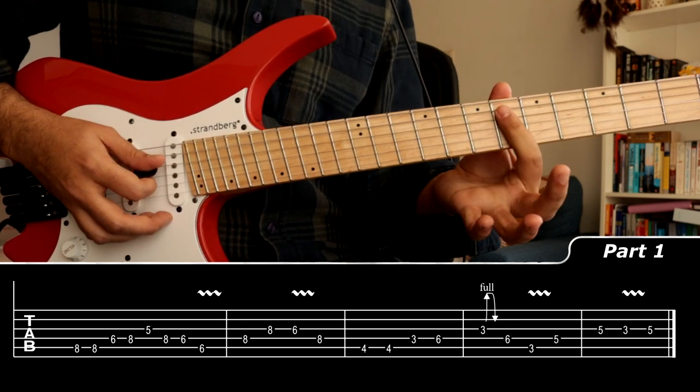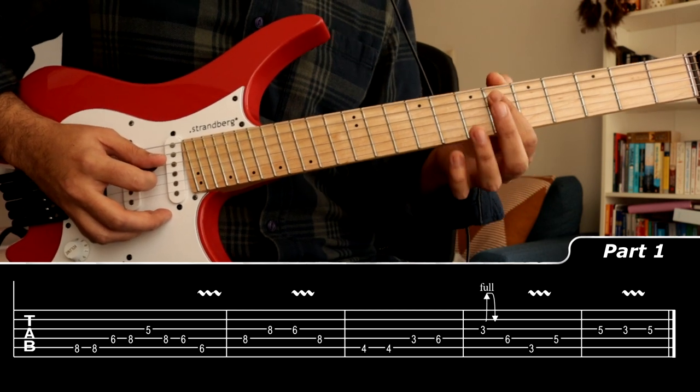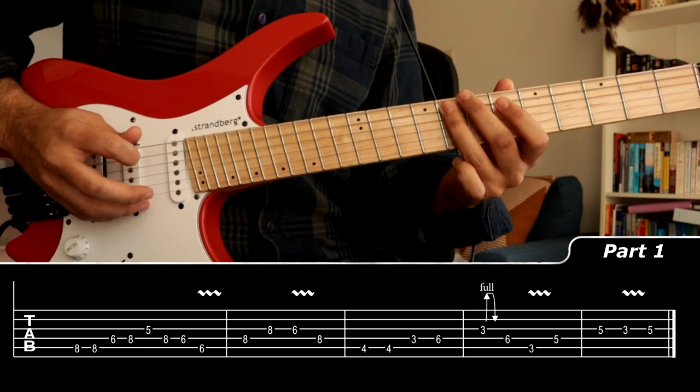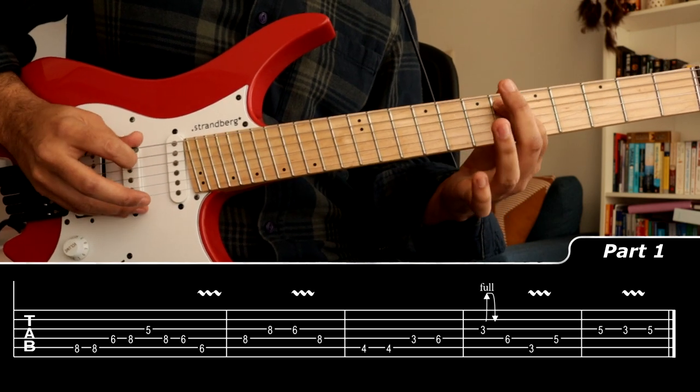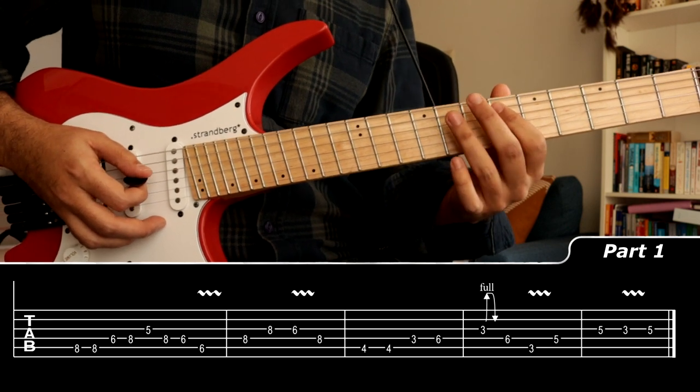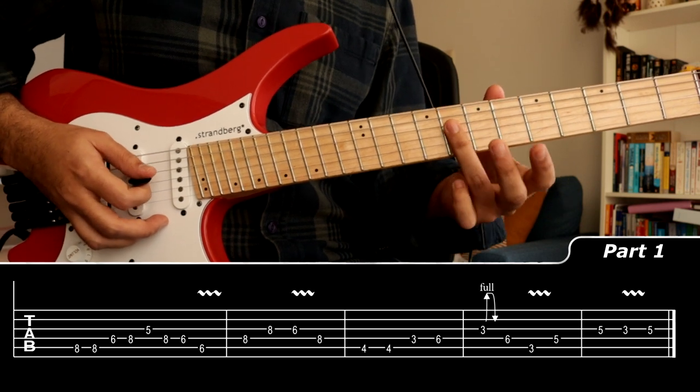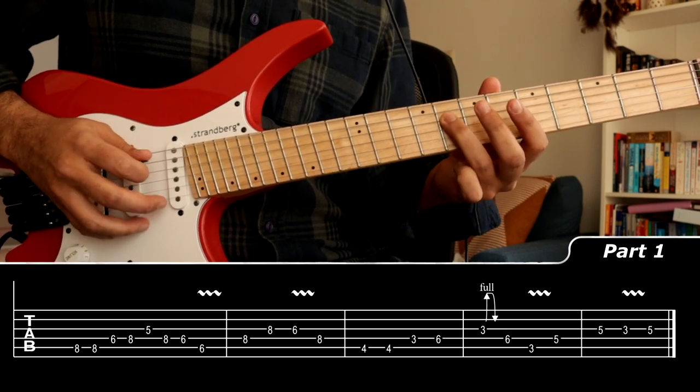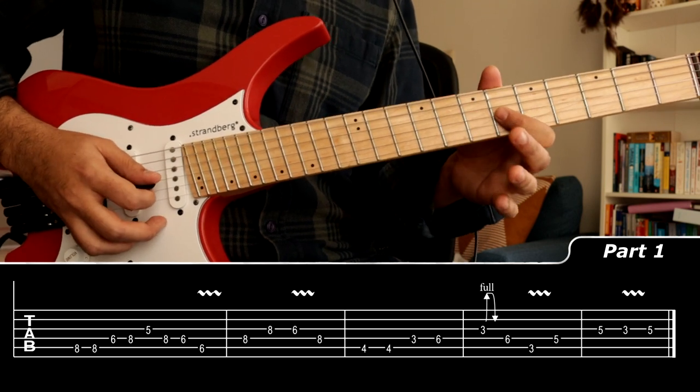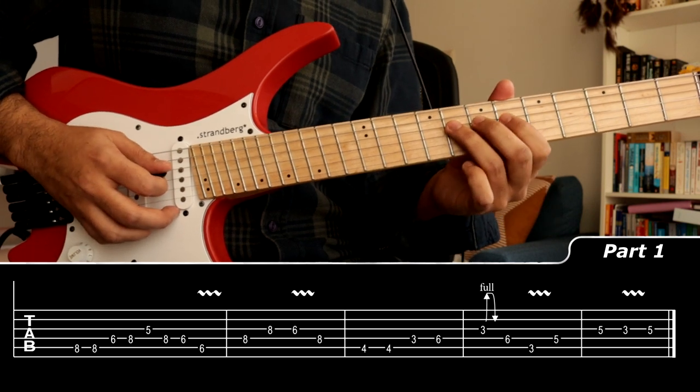And there you can basically just bar the two strings A and D so that you have easy access to that next sixth note. Add a little bit of vibrato. Then we continue on—you're going to bar with your ring finger the eighth fret D and G string. Then you play eight on the D and eight on the G, then you go to six on the G, back to eight on the D.